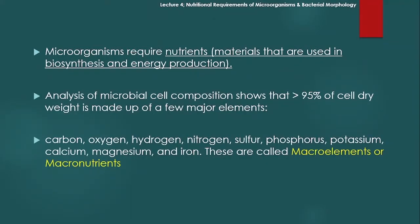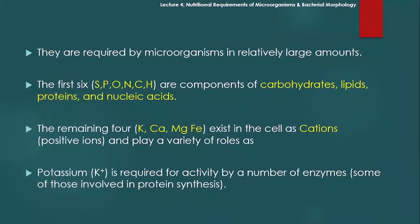کیوں macro elements یا macro nutrients کہتے ہیں؟ اس بنا پہ کہتے ہیں کہ یہ بڑی تعداد میں چاہیے، کثرت میں چاہیے، large amount میں چاہیے۔ آپ ان macro elements کو ایک formula سے بھی یاد کر سکتے ہیں جیسے SPONCH — یعنی Sulfur، Phosphorus، Oxygen، Nitrogen، Carbon، Hydrogen — یہ macro elements ہیں۔